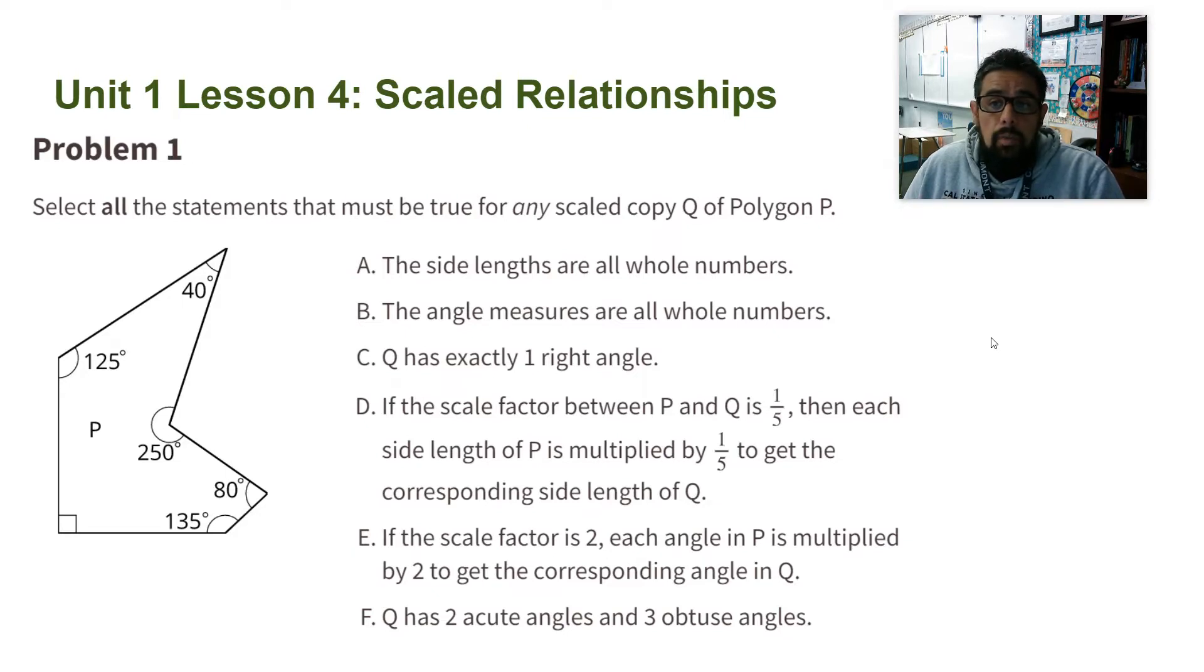Statement A: The side lengths are all whole numbers. This depends on the scale factor. We've seen examples where the copy does have all whole numbers and examples where it doesn't, so it all depends on the side lengths and the scale factor.